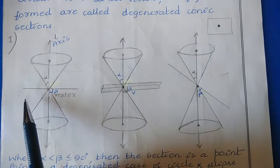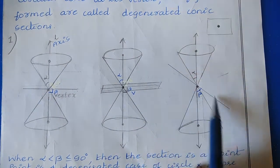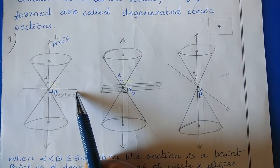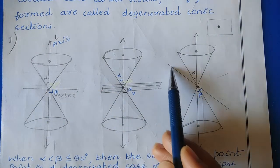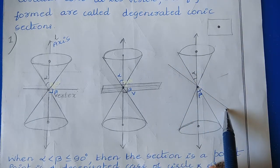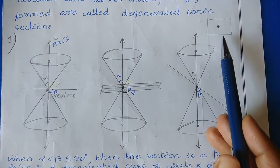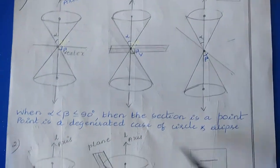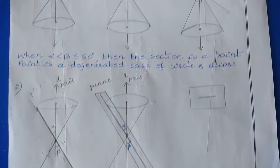We intersect the plane in the circle direction — parallel to the base — and in the ellipse direction. In both cases we are going to get a point. So a point is a degenerated case of circle and ellipse.